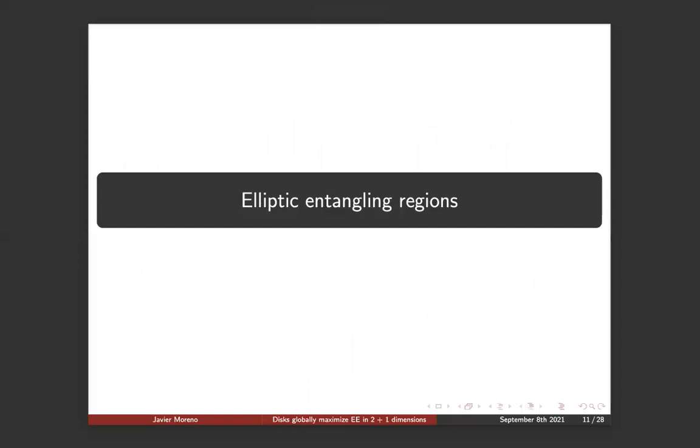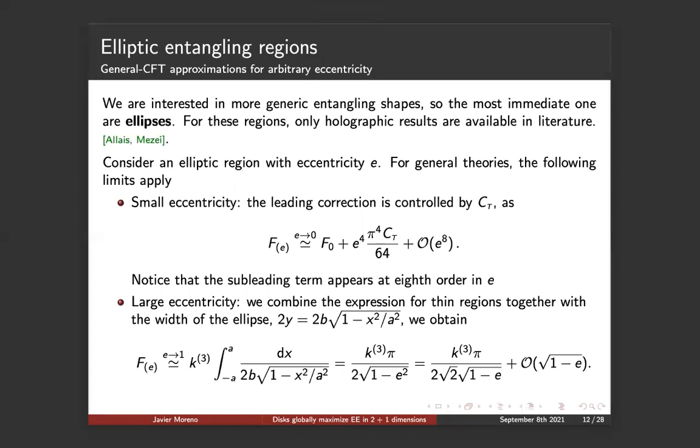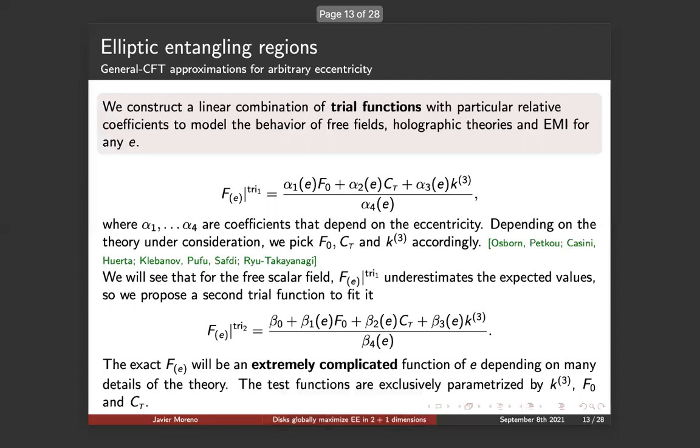Okay, now let's discuss other new results regarding, first of all, the elliptic entangling regions, which are the first non-trivial generalization after the disk. We're going to parameterize by some eccentricity E. For general theories, we're going to know that the following limits apply. Whenever we deal with a small eccentricity, the leading correction is going to be controlled by CT, as the Messe results suggest. And on the other hand, the large eccentricity limit is going to be characterized by the strip coefficient, because you are going to end up with a very squashed ellipse, a very long one. And F of E is going to be depending on this K3, the coefficient of the strip.